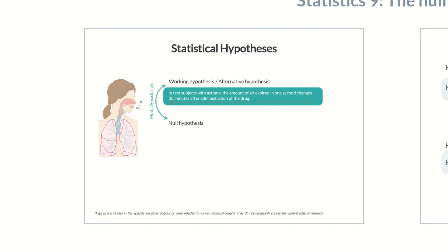The null hypothesis is mutually exclusive to the alternative hypothesis. So in our example, the null hypothesis would be: in test subjects with asthma, the amount of air expired in one second doesn't change 30 minutes after administration of the drug.